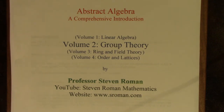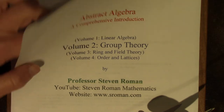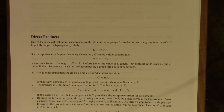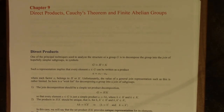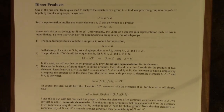Hello, everyone. This is Professor Roman. Let's continue the group theory lecture. We're ready now to take a look at Chapter 9: Direct Products, Cauchy's Theorem, and Finite Abelian Groups. We'll begin with Direct Products.